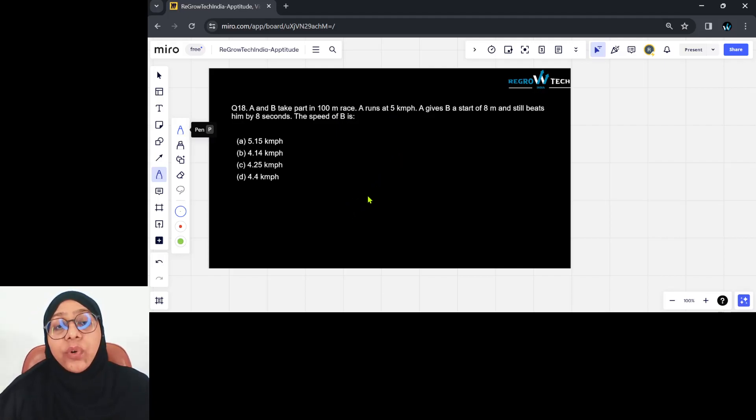Now first things first. Let us understand what do you mean by A gives B a start of 8 meters. If A is giving B a start, meaning A will complete the entirety of 100 meters, A will start at 0 and go up to 100, whereas B will start at 8 meters and go up to 100, meaning B will only be covering 92 meters.